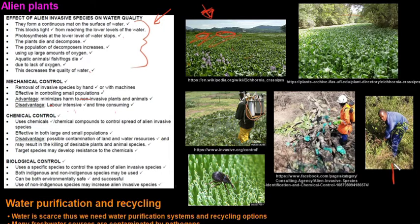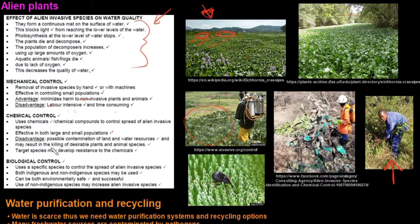The disadvantage of mechanical control is that it is labor intensive and time consuming. Chemical control uses chemicals or chemical compounds to control the spread of alien species. It is effective in both large and small populations. The disadvantage is the possible contamination of land and water resources, and it may result in the killing of desirable plants and animal species. The target species may also develop resistance to these chemicals over time.